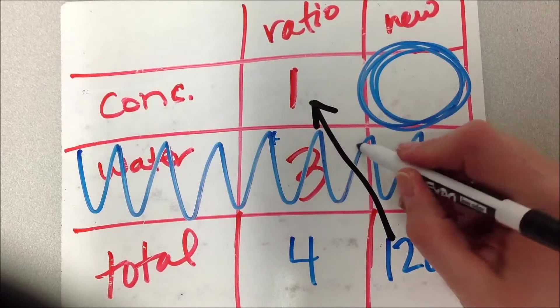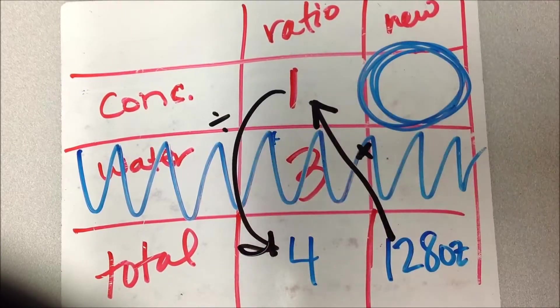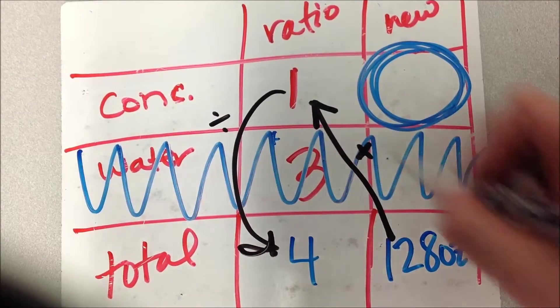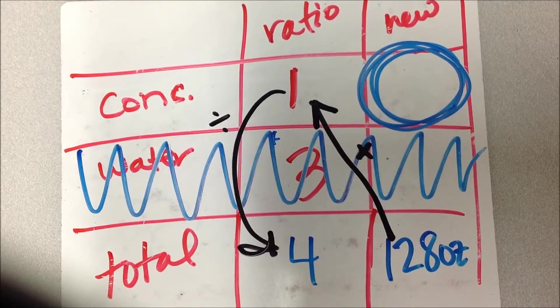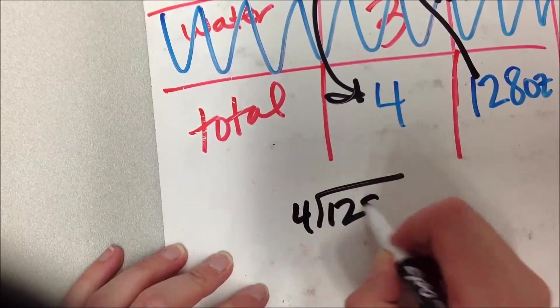Just like before, I'm going to multiply the ones that are diagonal and divide by whatever's left. 128 times 1 - that's pretty easy, that's just 128. But now I've got to divide it by 4. 4 into 128.